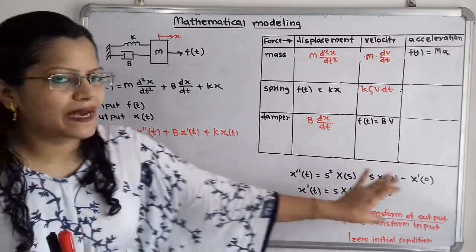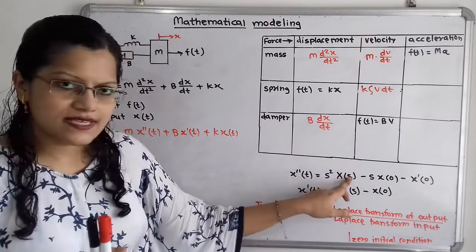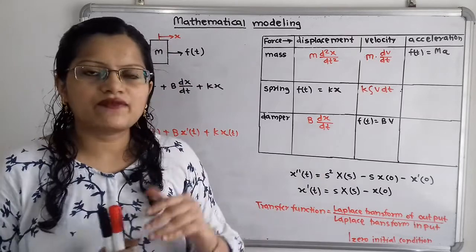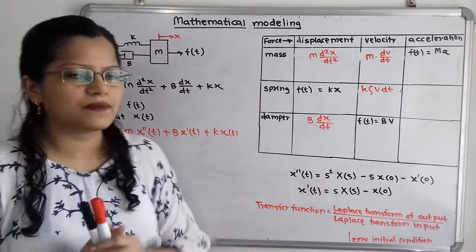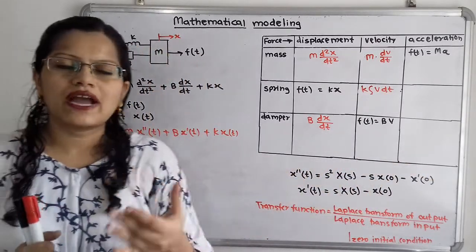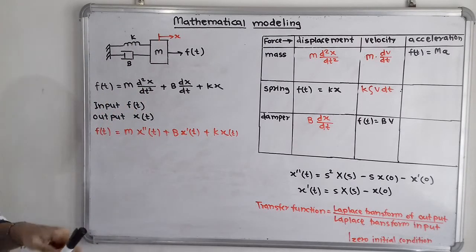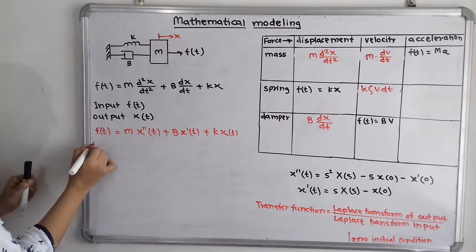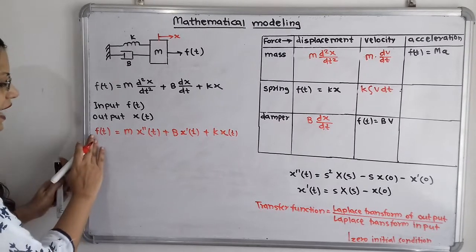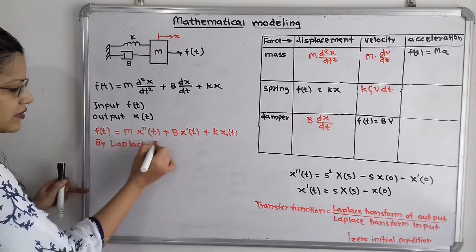This is the Laplace transform. Instead of t we write s: for the second order term we take s², and for the first order term we simply take s. Note down these two formulas. Now I will rewrite this by taking the Laplace transformation, so f(t) becomes F(s).